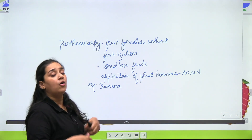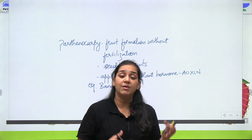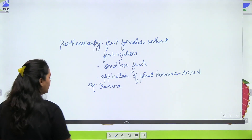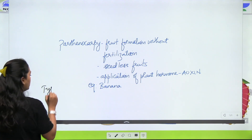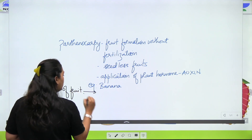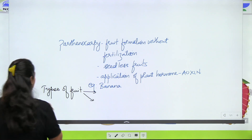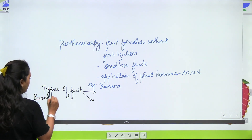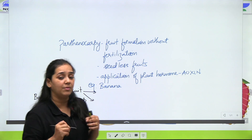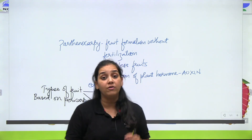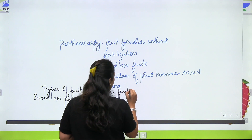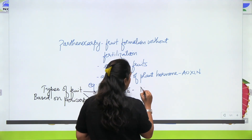Yeh ek aur concept hai hamare paas. Aur what are the other types of fruits? Fruits mein fleshy or dry — iske hisaab se again you have two different categories of fruits. So let us take types of fruits based on the fruit wall. Fruit wall ko hum kya bulaate hai? Fruit wall ko hum bulaate hai pericarp. Aapko yaad hoga aapne morphology of flowering plant mein epicarp, mesocarp, endocarp padha hai. Toh jo fruit wall fleshy hota hai, toh hum usko bulaate hai fleshy fruits.